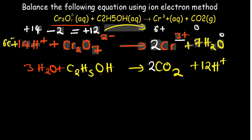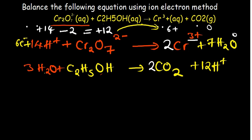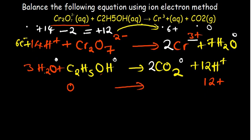For the second half reaction: water, alcohol, and carbon dioxide all have zero charge, and only the hydrogen ions carry charge — 12 positives on the right. The left side has a charge of zero. Moving from 0 to +12 is an increase in oxidation number — this is oxidation. We therefore lose 12 electrons, which are placed on the right-hand side.